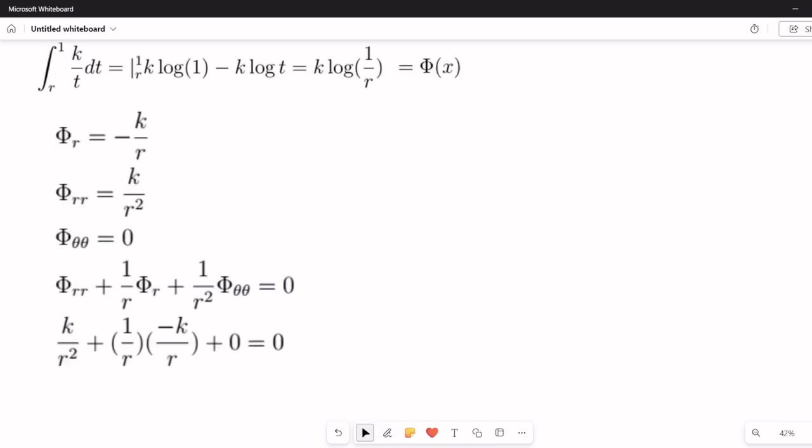Now work is the integral of force with respect to distance. So φ(x) is the integral from r to 1 of K/t dt, or K times log(1/r). Note that log here refers to natural logarithm, so base e, and t is a dummy variable representing distance at any specific time. We can quickly verify that this is harmonic: φ_r = -K/r, φ_rr = K/r², and φ_θθ = 0.